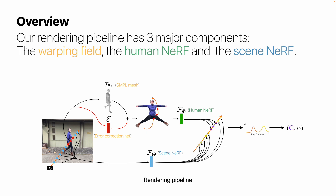For the samples passing through the human, we warp them to the canonical space via a warping field, and then evaluate the color using the human NeRF. Then we merge the outputs from the two NeRF models to obtain the final color.